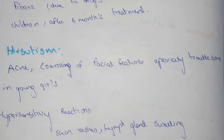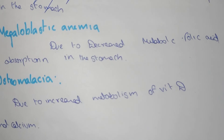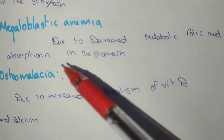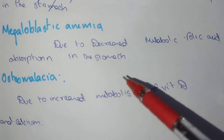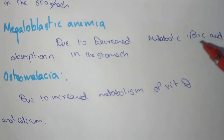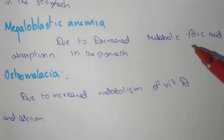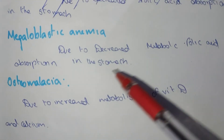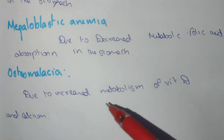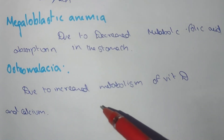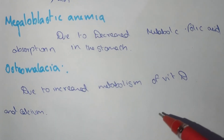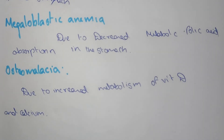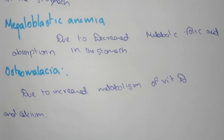Other adverse effects include hypersensitivity reactions such as skin rashes and lymph gland swelling. Megaloblastic anemia is seen due to decreased folic acid absorption in the stomach. Osteomalacia is also seen due to increased metabolism of vitamin D and calcium.